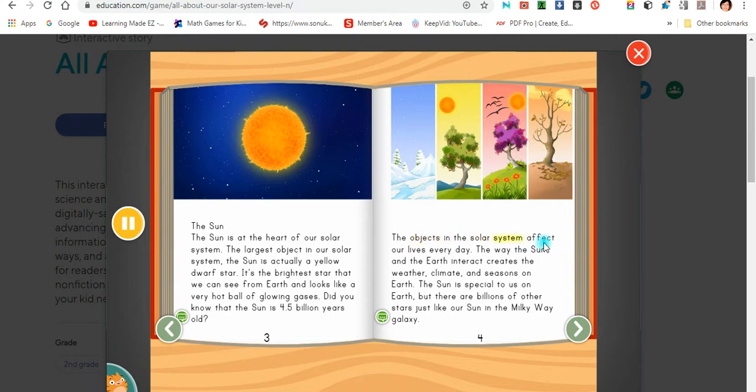The objects in the solar system affect our lives every day. The way the sun and the Earth interact creates the weather, climate, and seasons on Earth. The sun is special to us on Earth, but there are billions of other stars just like our sun in the Milky Way galaxy.